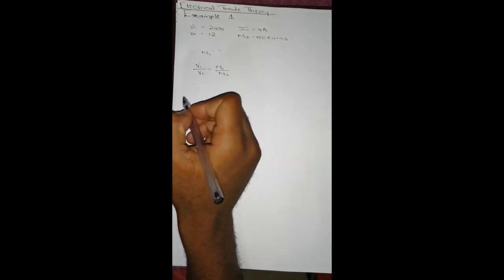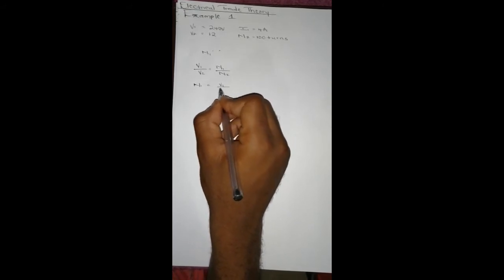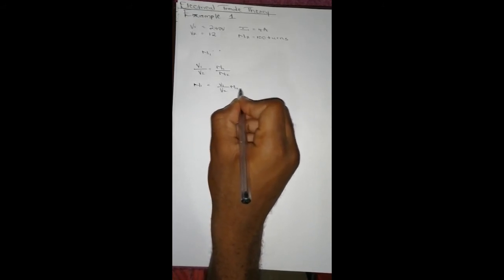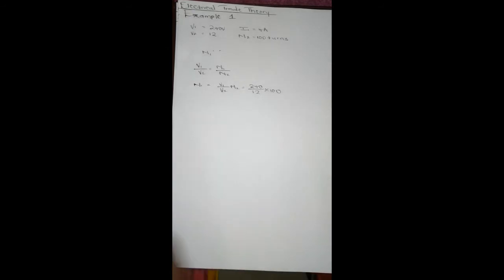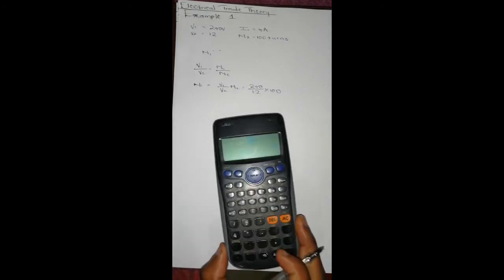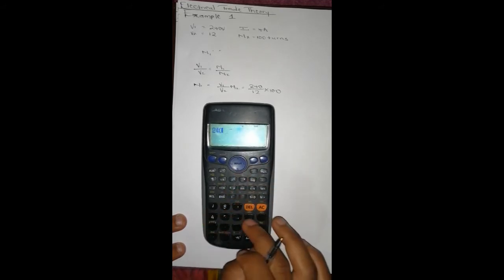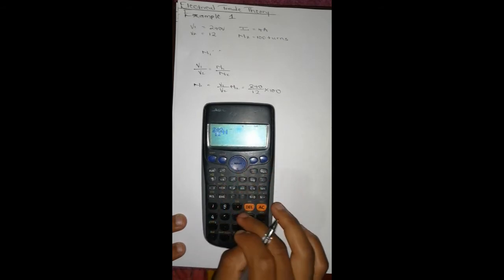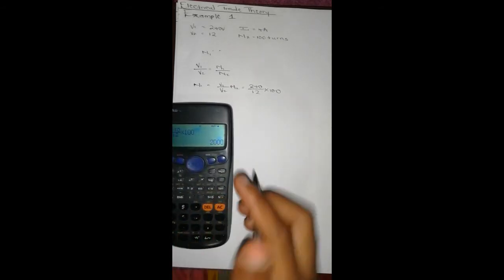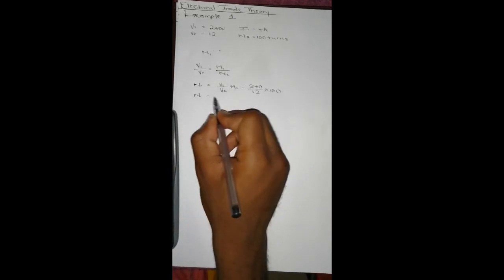When making N1 subject of the formula, we're going to end up with N1 = (V1/V2) × N2. Substituting what we have: 240/12 × 100. Let's punch that into our calculator: 240/12 × 100, and that's 2000. So N1 equals 2000 turns.